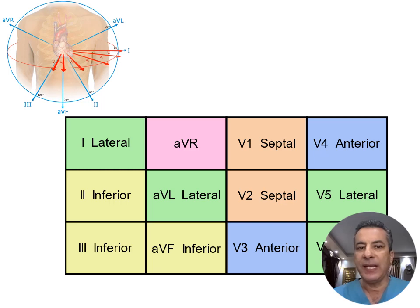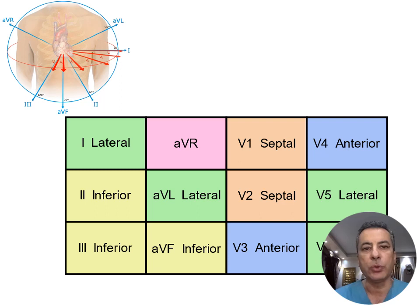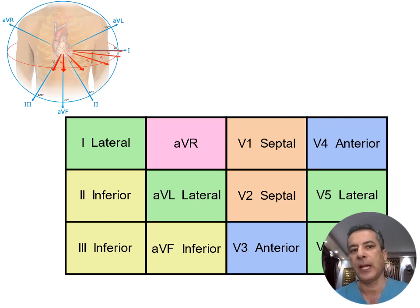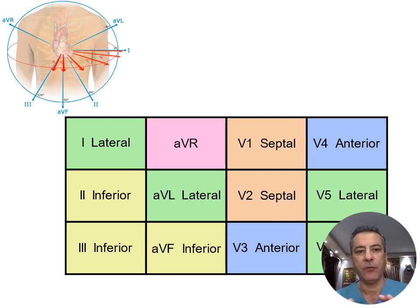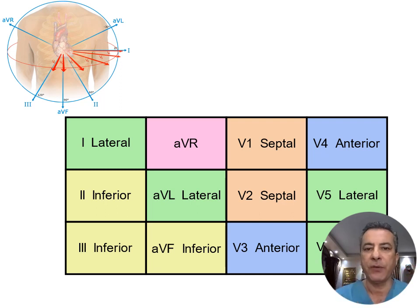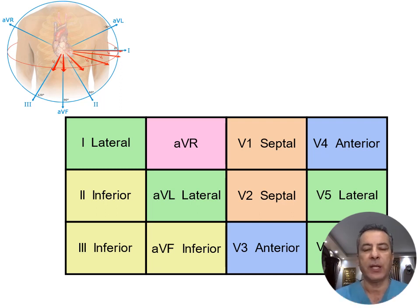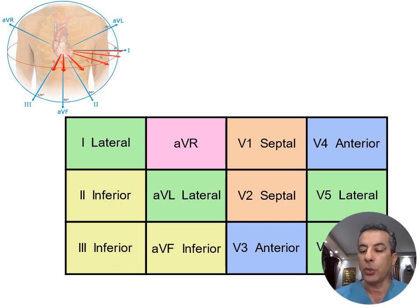Utilizing the 12 leads allows us to examine the electrical activity of the heart from two different perspectives: six in the frontal plane and six in the horizontal plane. Leads I and aVL provide a high lateral perspective; leads V5 and V6 offer a lateral view; leads II, III, and aVF offer an inferior perspective; V1 and V2 focus on the interventricular septum; and V3 and V4 concentrate on the anterior wall of the heart.